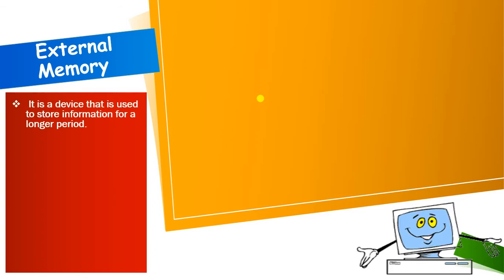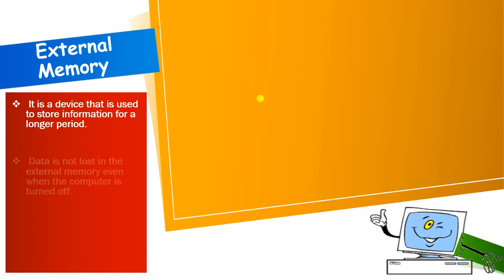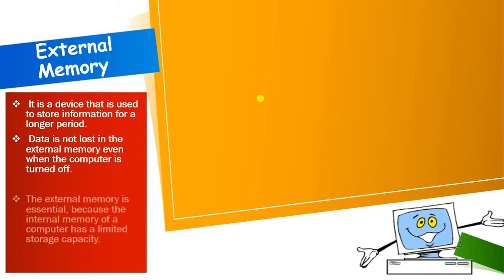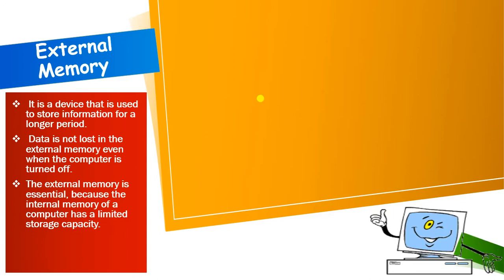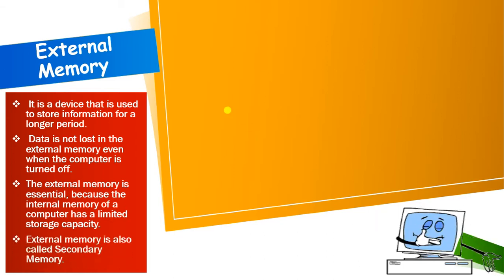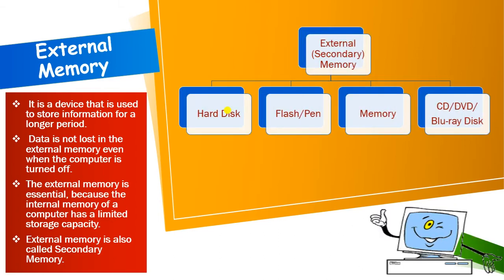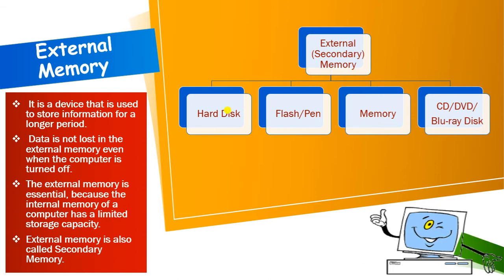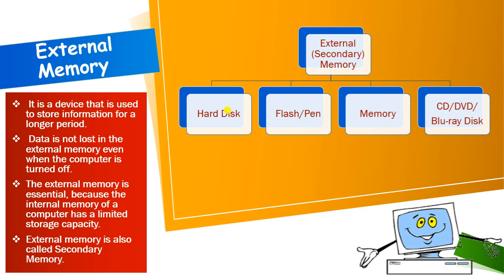Next is external memory. We have studied that there are two types of memory: internal memory and external memory. Internal memory is of two types — RAM and ROM, which we have just seen. External memory is a device used to store information for a longer period of time. Whenever you want to store information for a longer period, you should store it in external memory. Data is not lost in external memory even when the computer is turned off — when you shut down the computer, the data will not be lost.